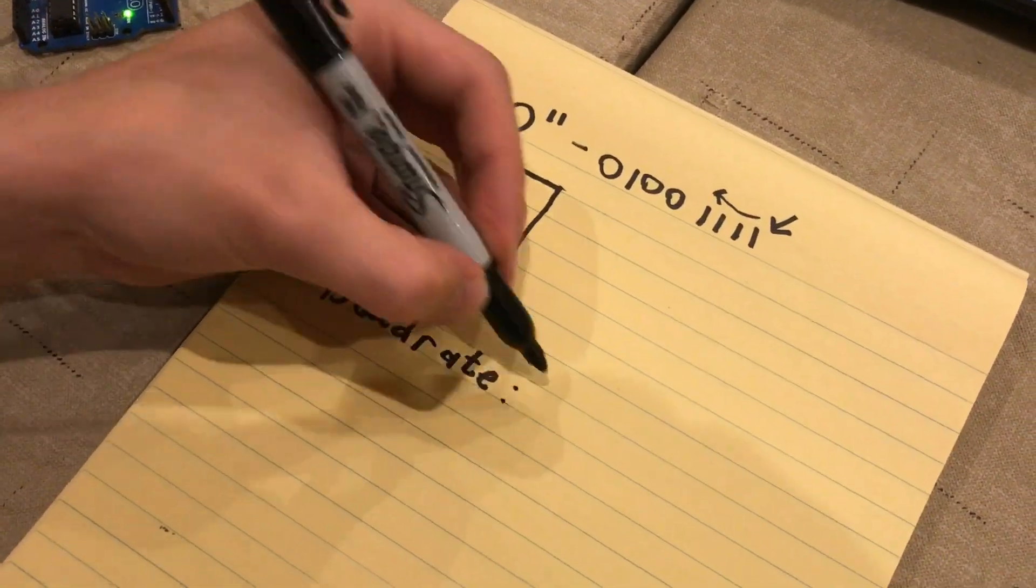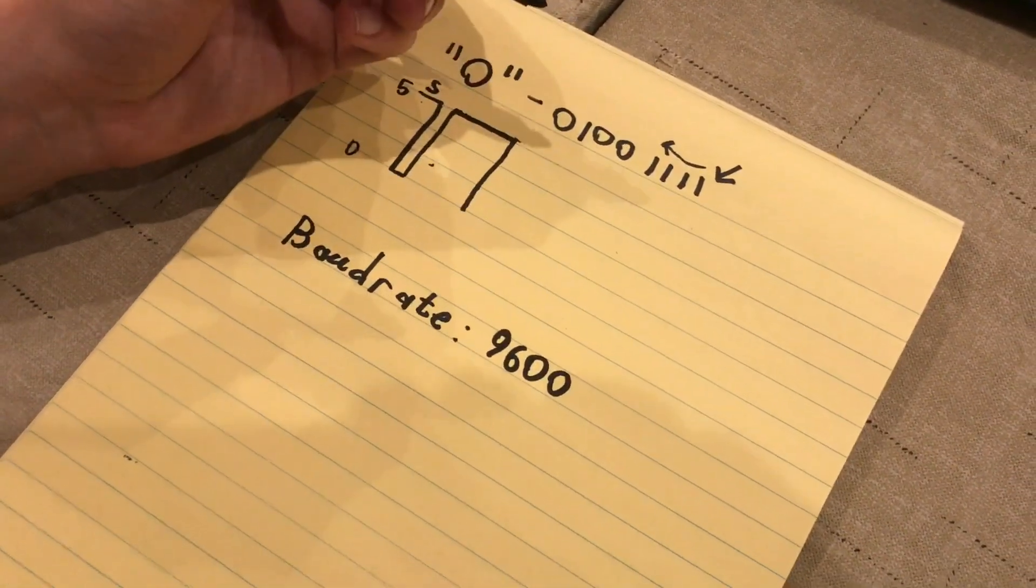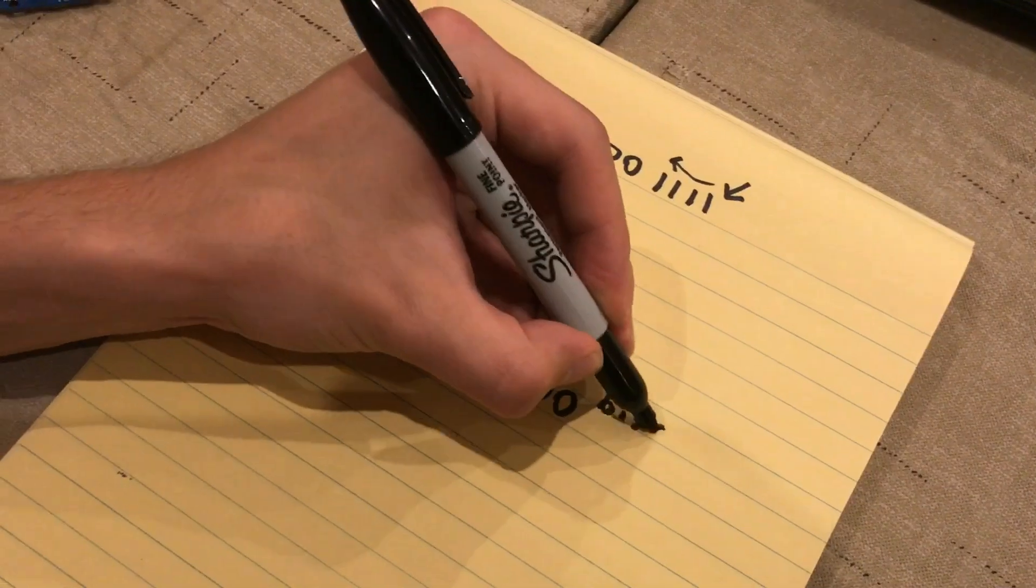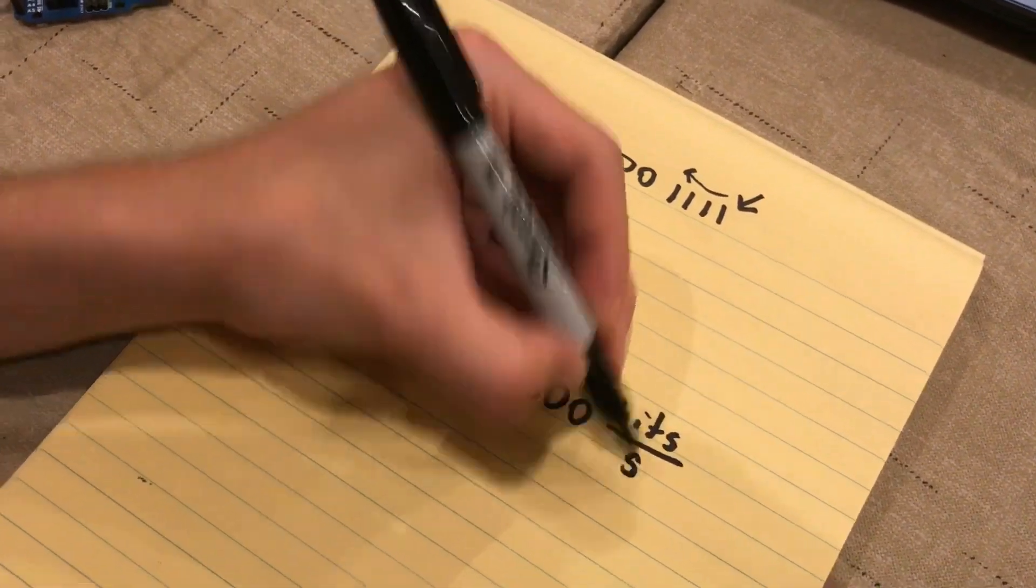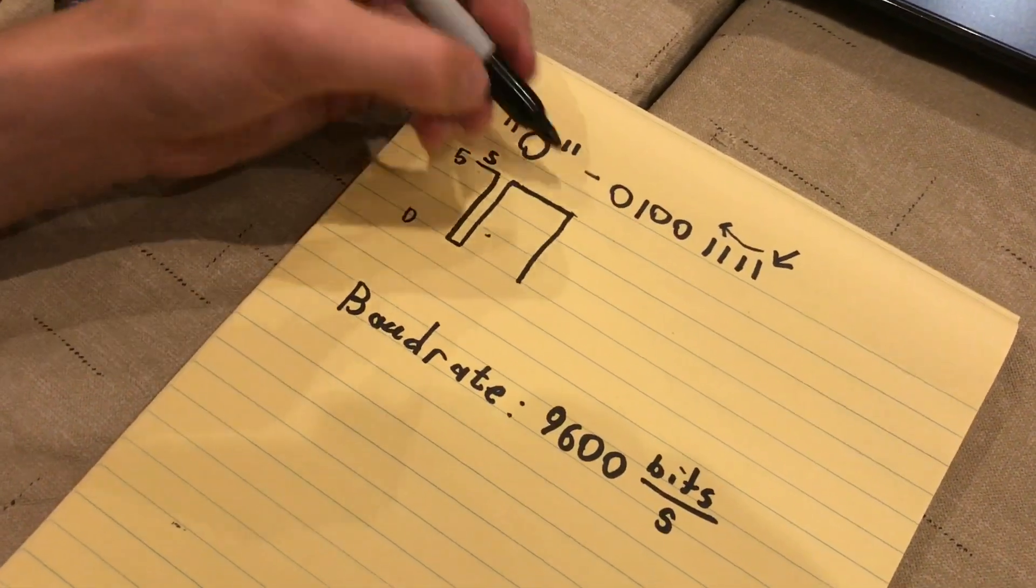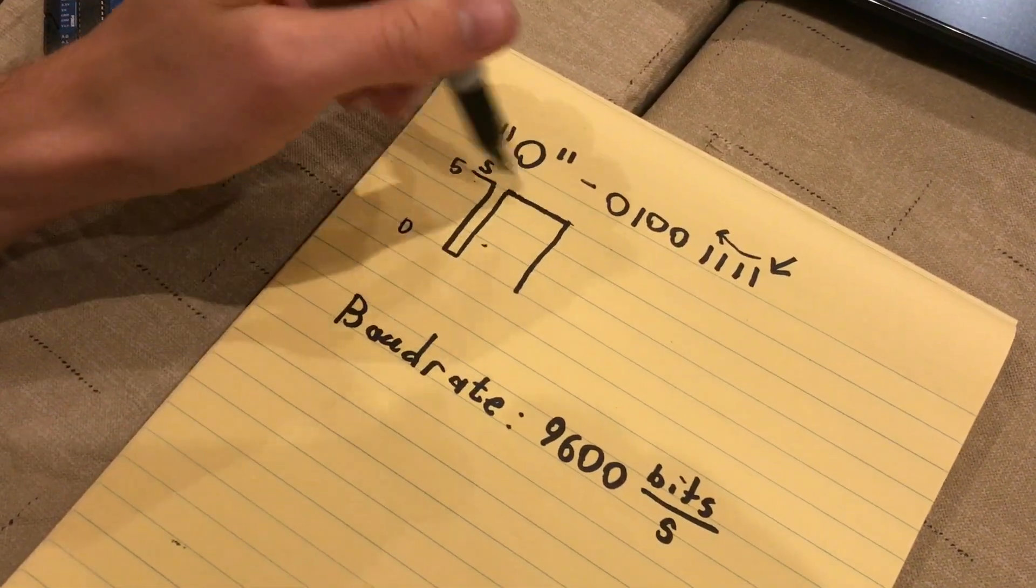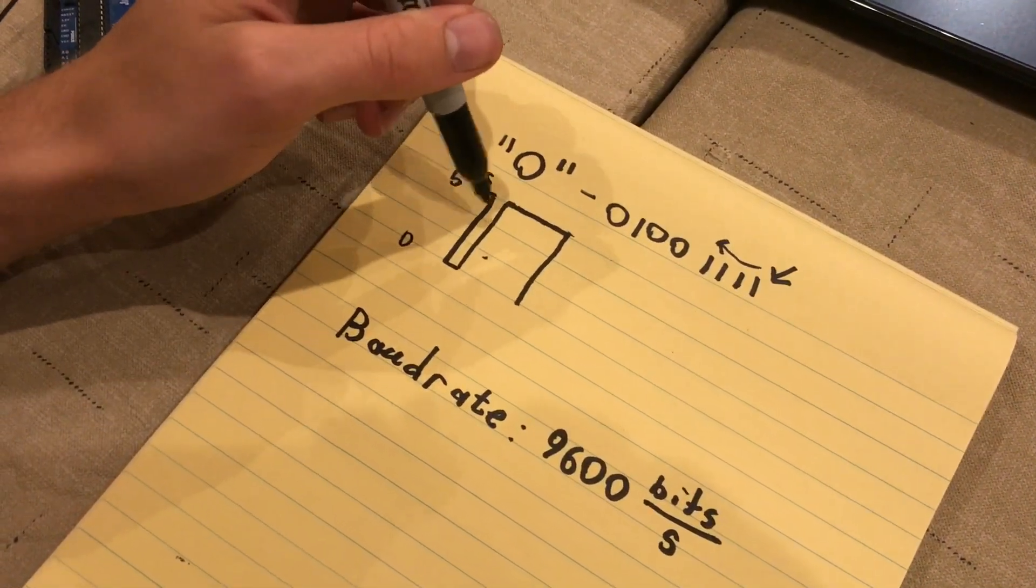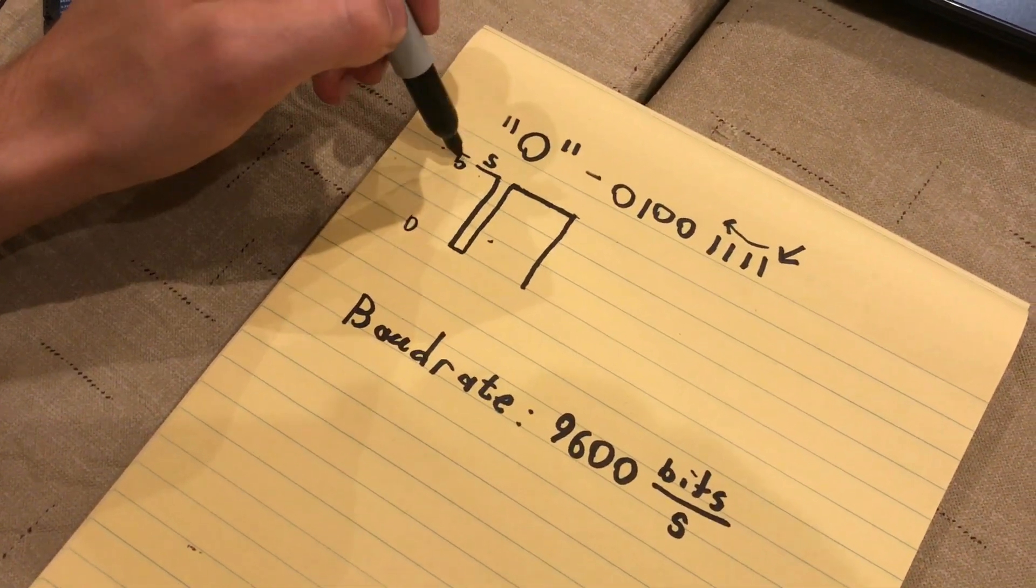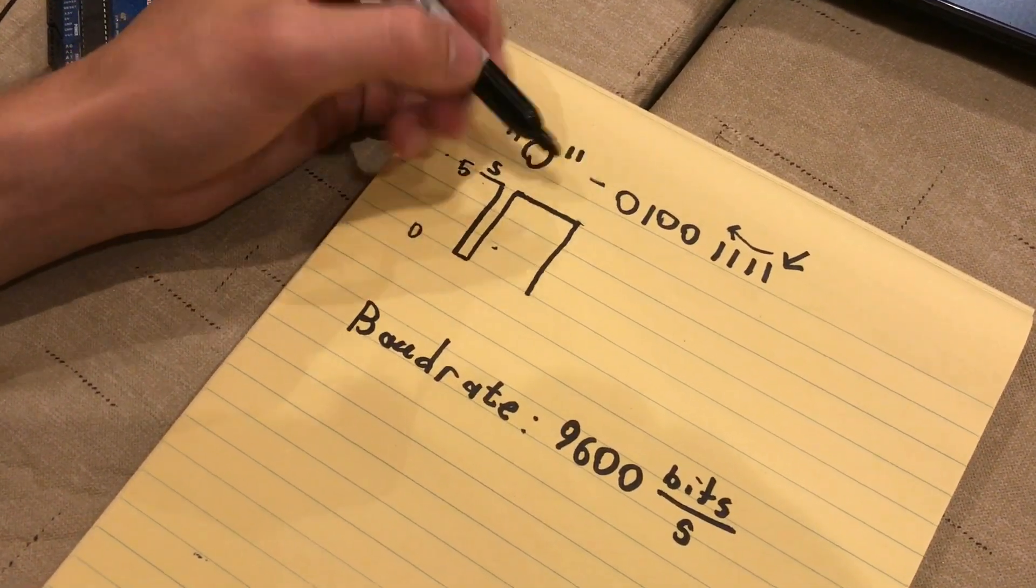So, a practical example, 9,600 baud rate means 9,600 bits per second. What that means is every 1/9,600th of a second, the receiving device is going to check this transmit pin and see if it's 0 volts or 5 volts. So, it's actually going to check it four times during this period.